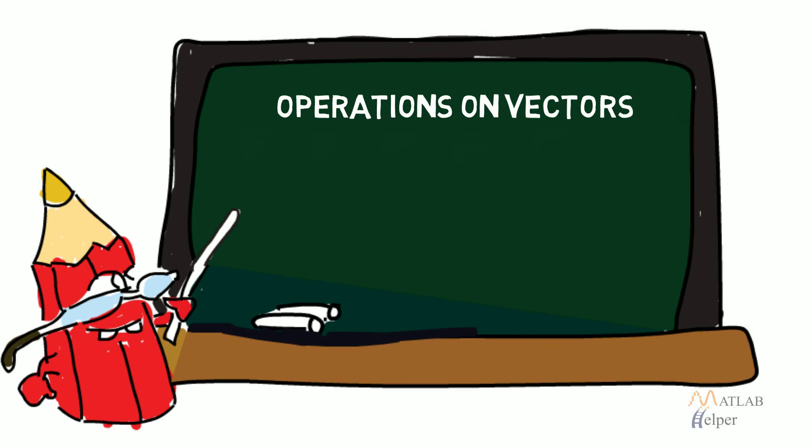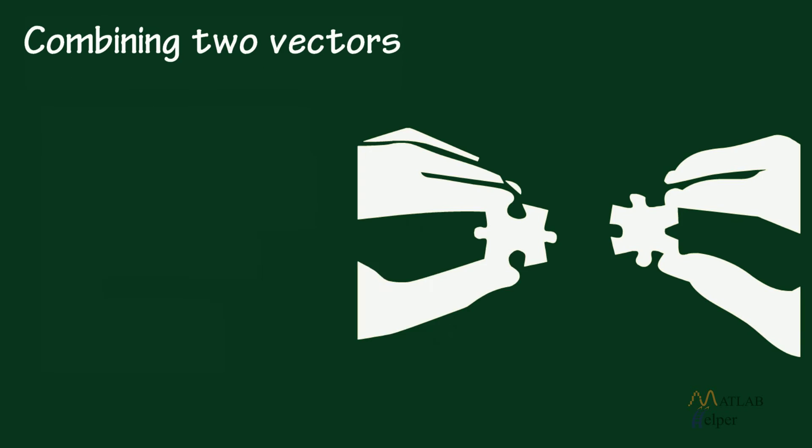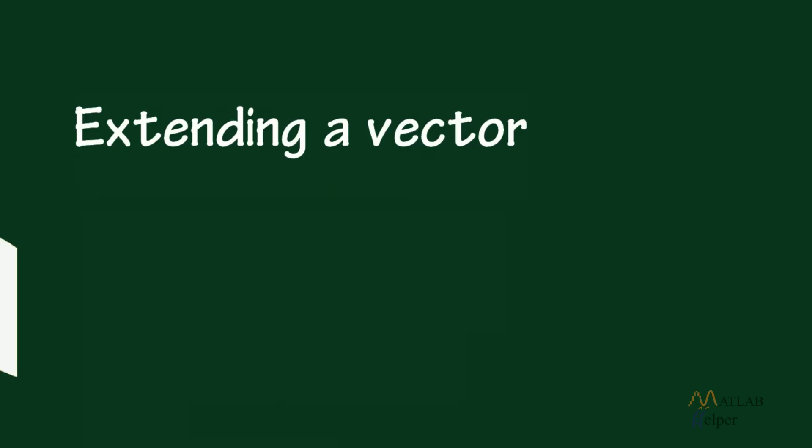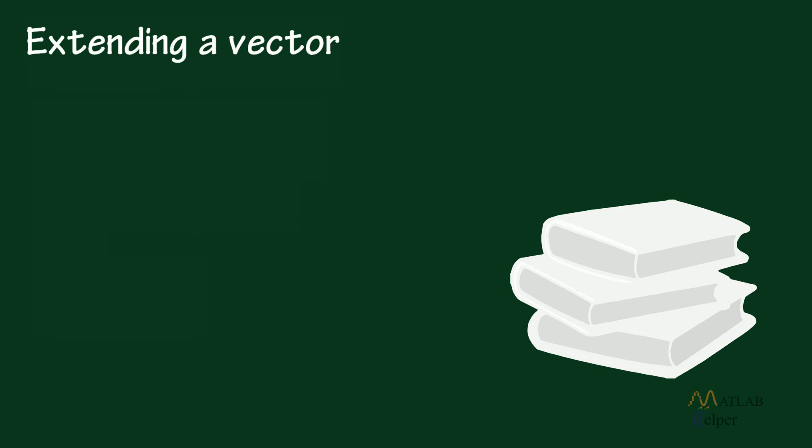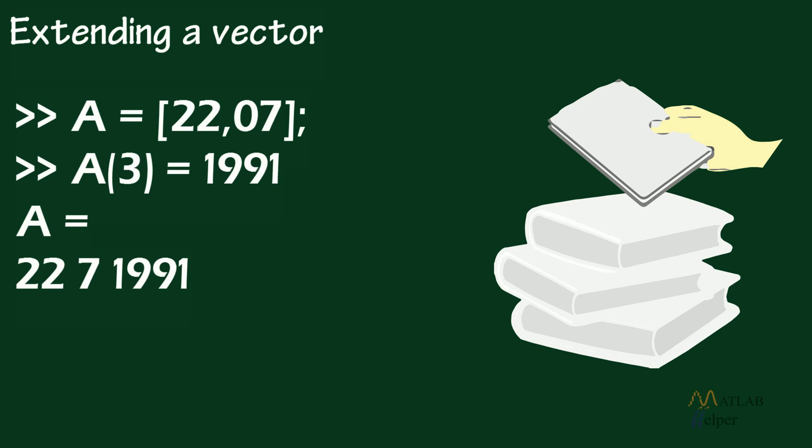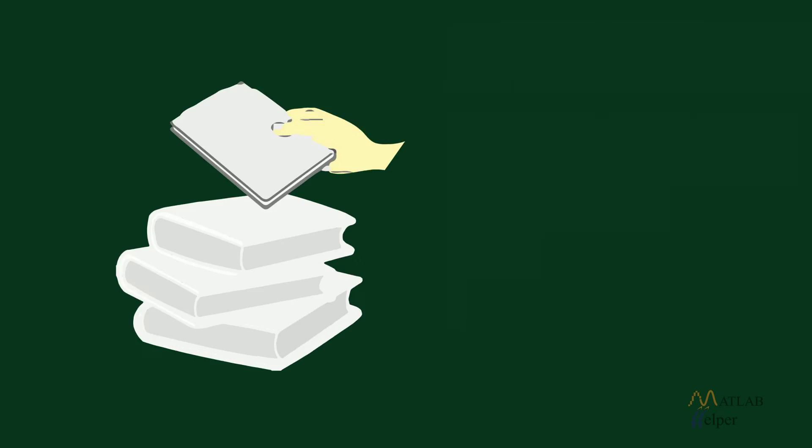Operations on vectors: combining two vectors. Two vectors can be combined by using the following command. Extending a vector: an already existing vector with n elements can accommodate more elements by simply assigning these new elements with the new index.